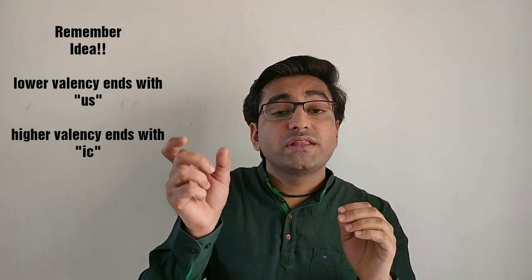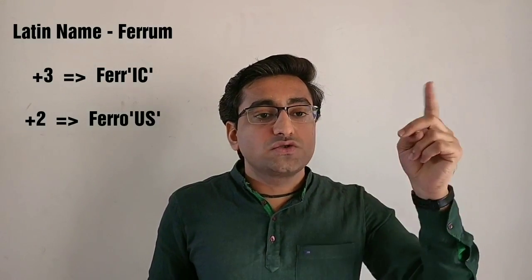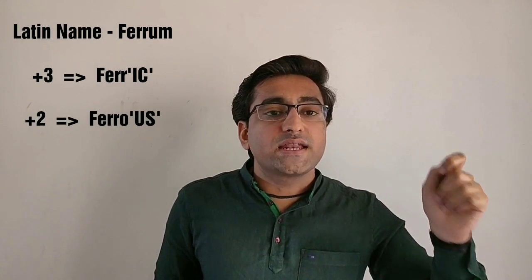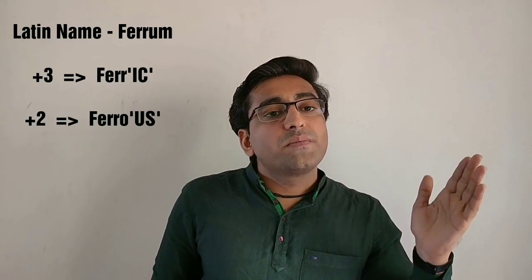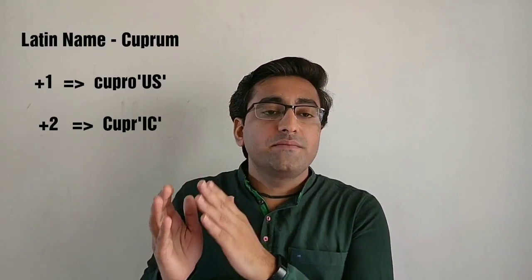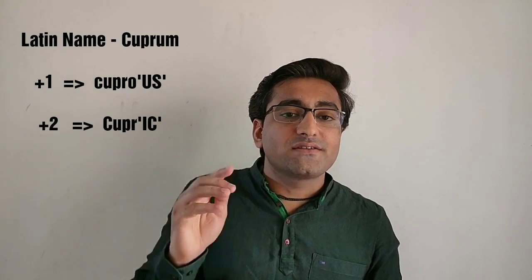Iron's Latin name is Ferrum and it has two states: plus 2 and plus 3. The lower number ends with 'ous' and the higher with 'ic'. So Iron in plus 3 state is called Ferric, and in plus 2 state is called Ferrous. Similarly, Copper's Latin name is Cuprum, with two states plus 1 and plus 2. Copper in plus 1 state is called Cuprous, and in plus 2 state is called Cupric.